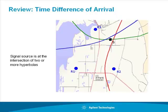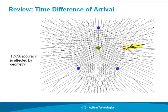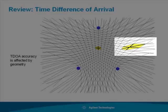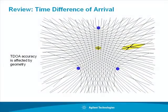If we have three or more receivers, we can locate the signal source by looking at the intersection of two or more hyperbolas. It's important to note that TDOA geolocation accuracy is affected by geometry. Transmitters which are surrounded by receivers can be located more accurately than transmitters that are outside of the receiver network. At distances far from the receiver network, the lines of constant time difference run nearly parallel, so the TDOA algorithm cannot provide a geolocation, but rather a line of bearing towards the signal.